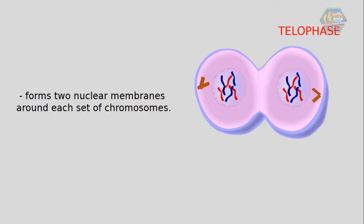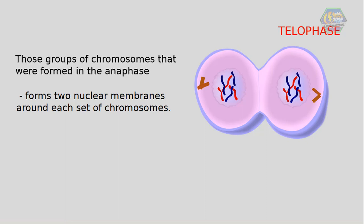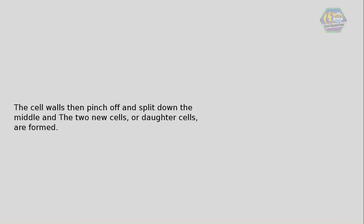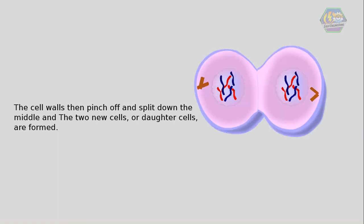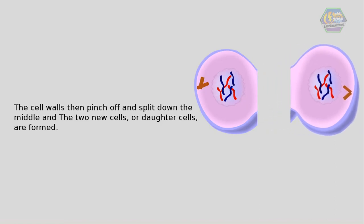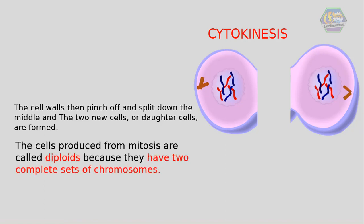Lastly, telophase. During telophase, the cell forms two nuclear membranes around each set of chromosomes — those groups of chromosomes that were formed in anaphase. Then the chromosomes uncoil, the cell walls pinch off and split down the middle, and the two new daughter cells are formed. The splitting of the cells is called cytokinesis, or cell cleavage. The cells produced from mitosis are called diploids because they have two complete sets of chromosomes.